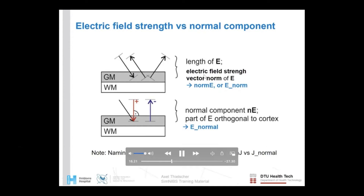In SimNibs, the electric field strength — the norm of the vector — is called 'norm_E' or 'normE' in results. An alternative is to look at the direction: specifically the component of the electric field flowing into or out of the cortex perpendicularly, which is called 'E_normal'. The same naming convention applies for current density: 'norm_J' for strength and 'J_normal' for the component flowing into or out of the cortex.